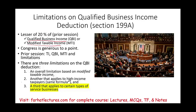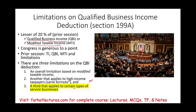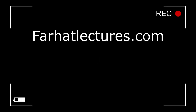We learned about one limitation in the prior session, which applies to high-income taxpayers with non-SSB businesses. We made sure we understood taxable income, qualified business income, modified taxable income, and qualified trade or business. In the prior session we covered the overall limitation and the limitation for high-income taxpayers. In this session, we will work the formula that applies to specified service businesses.